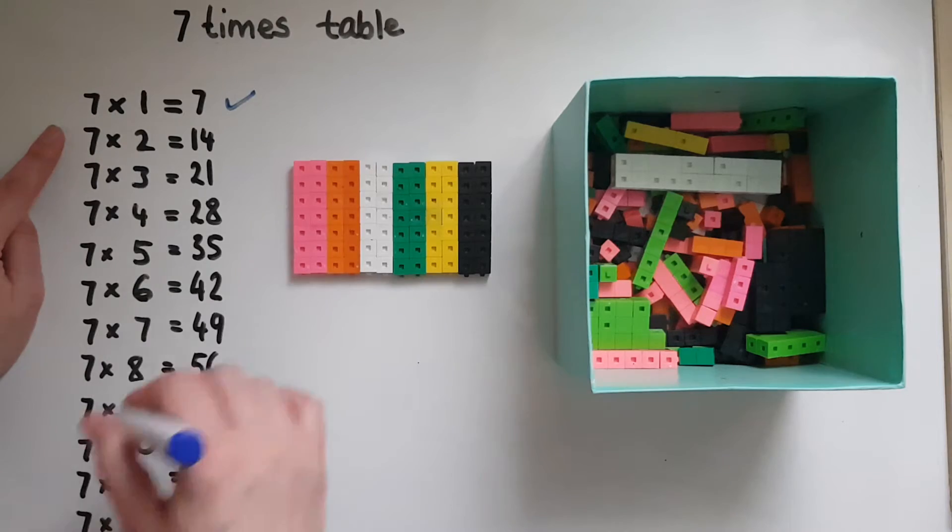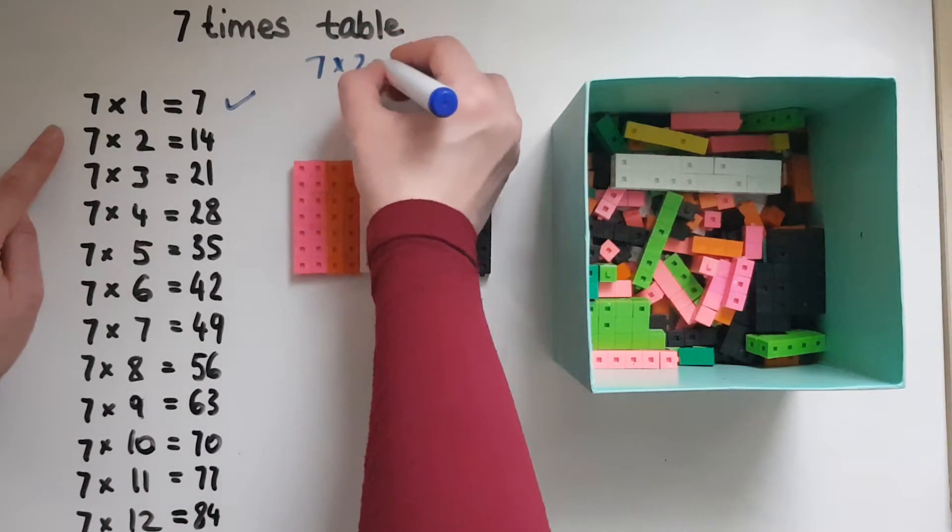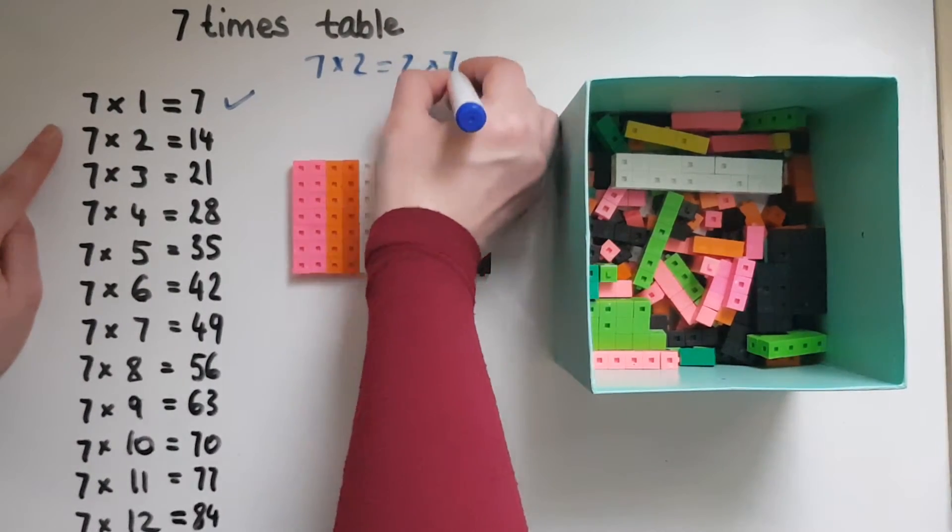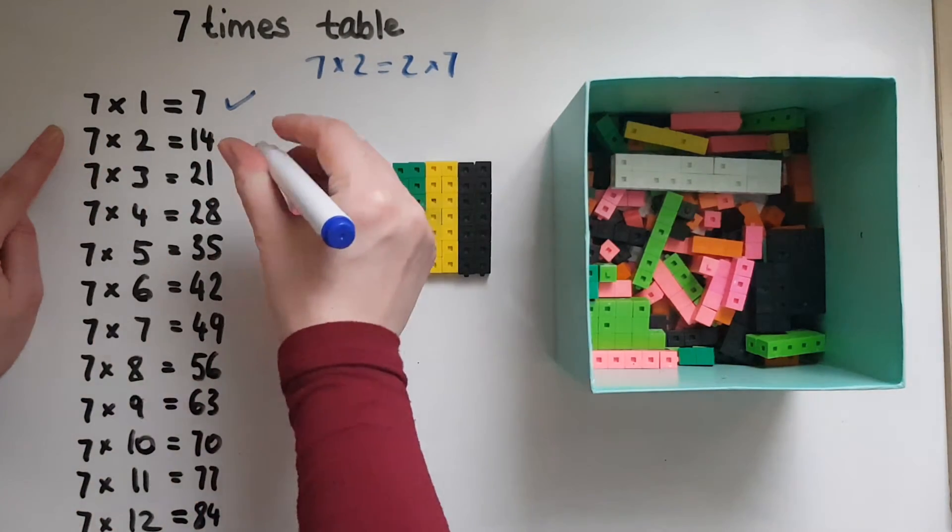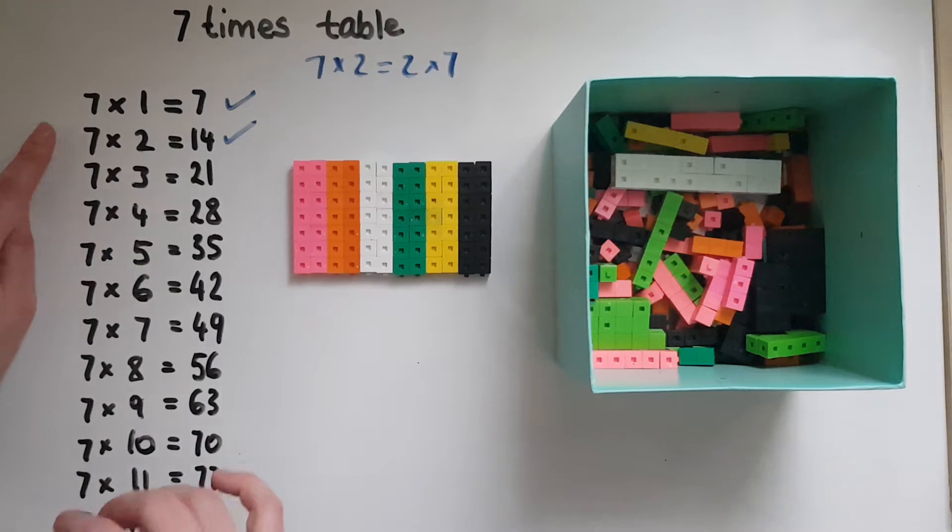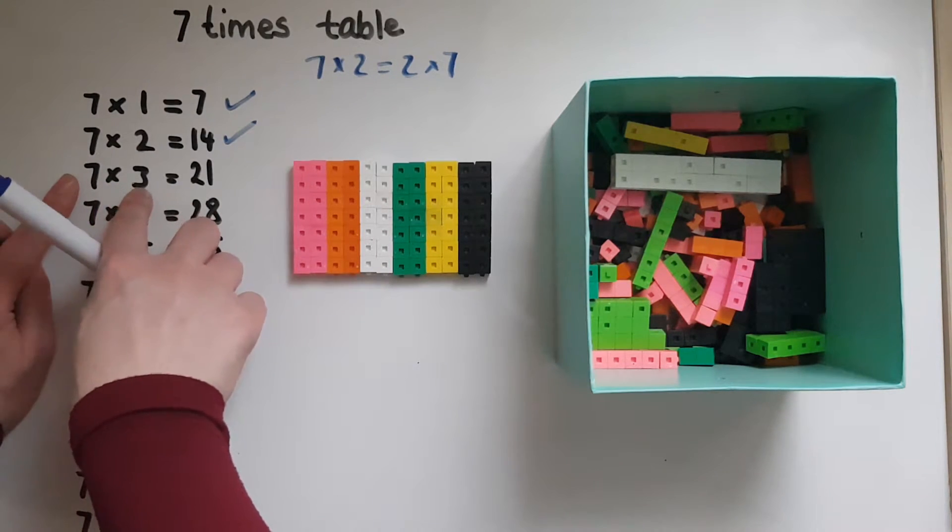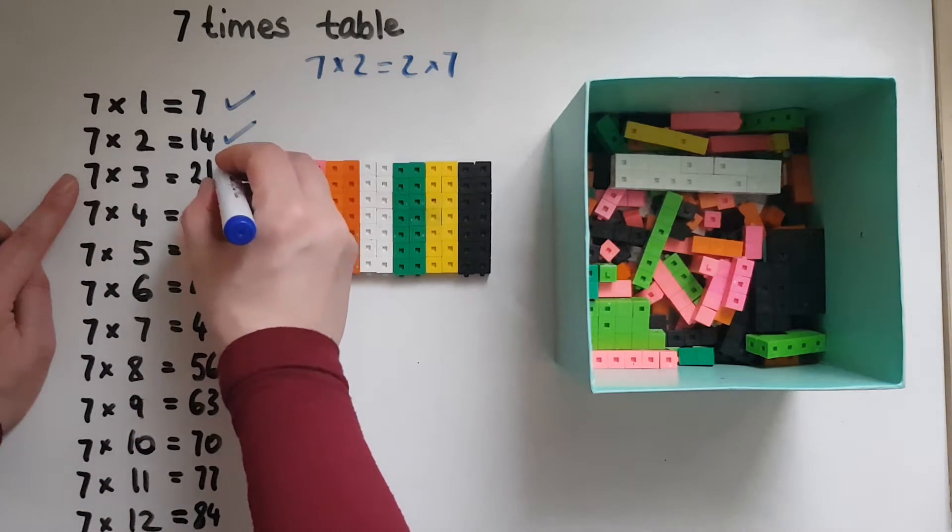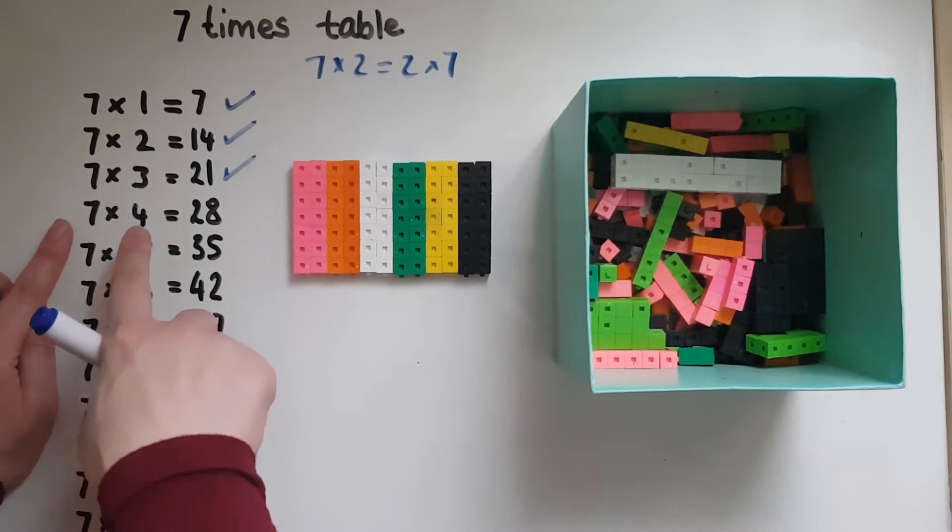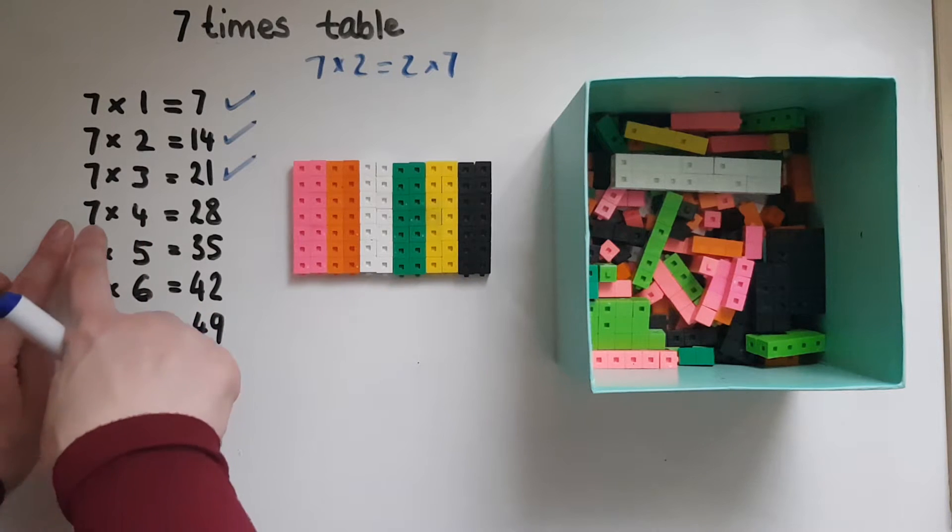Two lots of seven: because seven times two is the same as two times seven, you know the two times table trick. So seven and seven makes fourteen. You also know the strategies for the three times table, so seven and seven and seven—that's gonna give us twenty-one. And four lots of seven,